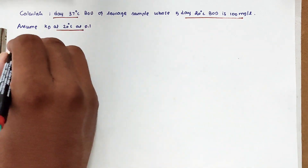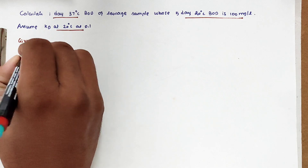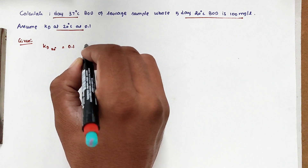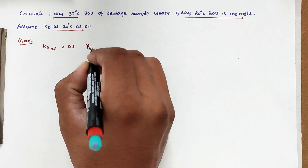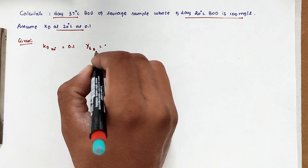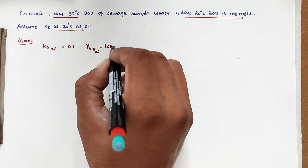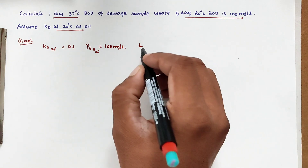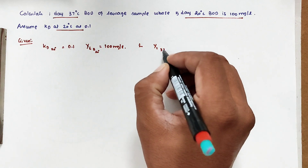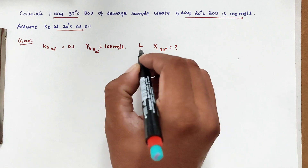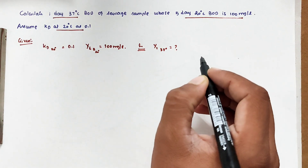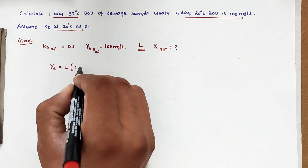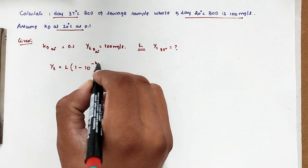The given values are: KD at 20°C is 0.1, and 5-day BOD (YT at t=5 days) at 20°C is 100 mg/L. First, we need to find the ultimate BOD value L, and after that we can find the 1-day BOD at 37°C. The formula is: YT = L × (1 - 10^(-KD × t)).